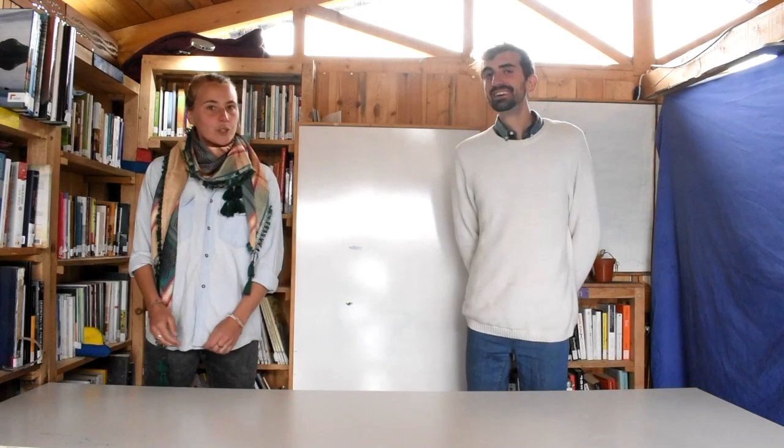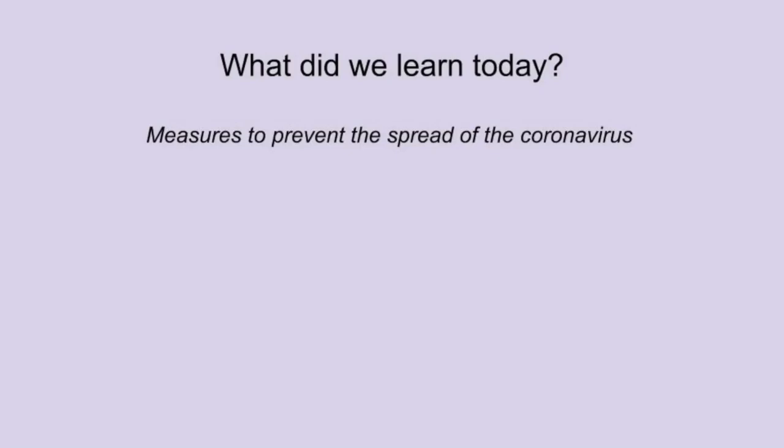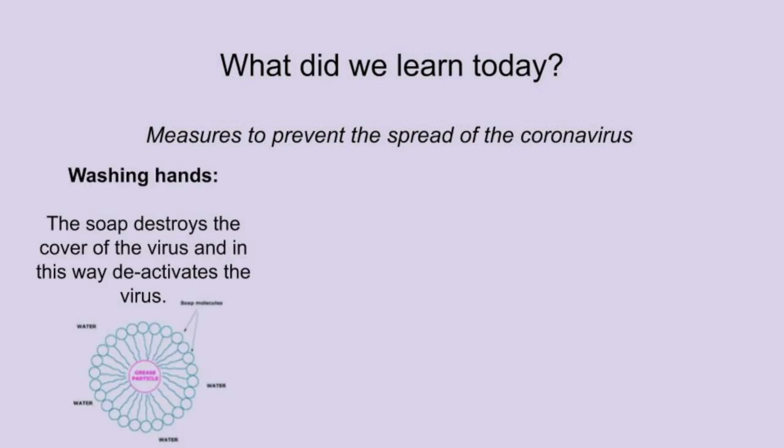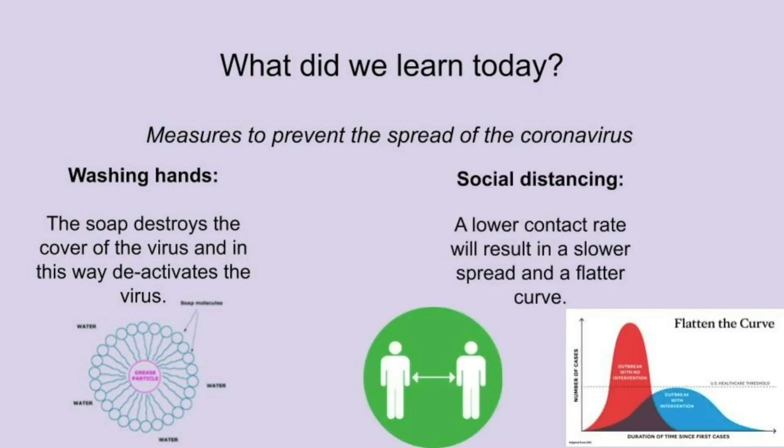So let's have a look at what we learned today. What did we learn today? Measures to prevent the spread of the coronavirus. Washing hands, the soap destroys the cover of the virus and in this way deactivates the virus. Social distancing, a lower contact rate will result in a slower spread and a flatter curve.